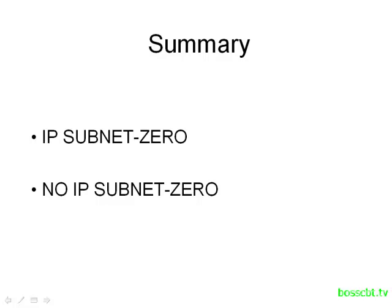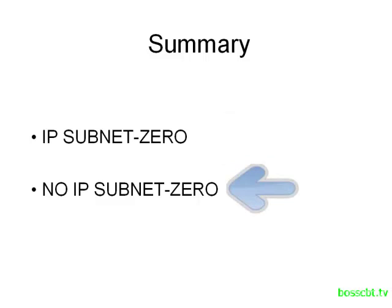Let's summarize. If you need to enable subnet zero support on your router, issue the IP subnet-zero command. And quite simply, if you want to remove that functionality, issue the no IP subnet-zero command. There's really no reason not to use it, but if you're in a lab and you want to play around and get a feel for this, that's the command you need to use. And finally, remember the subnet zero is the first subnet created when you subnet a classful network, and it shares the same subnet number as that classful network.